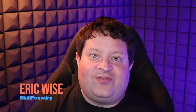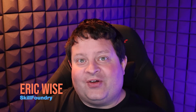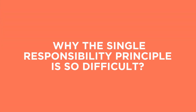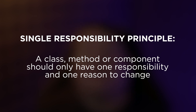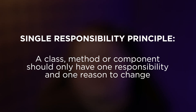I'm Eric Wise from Skill Foundry, where we teach people how to code the right way. Let's start off by talking about why the Single Responsibility Principle is so difficult, even though it's supposed to simplify things. The reason is right in its definition: the Single Responsibility Principle states that a class, method, or component should only have one responsibility and one reason to change.